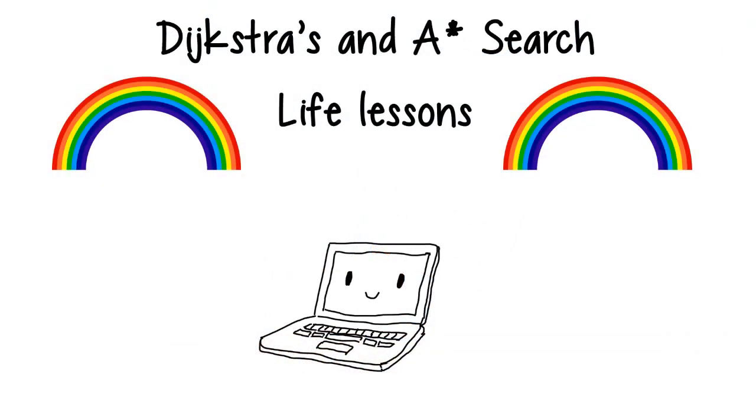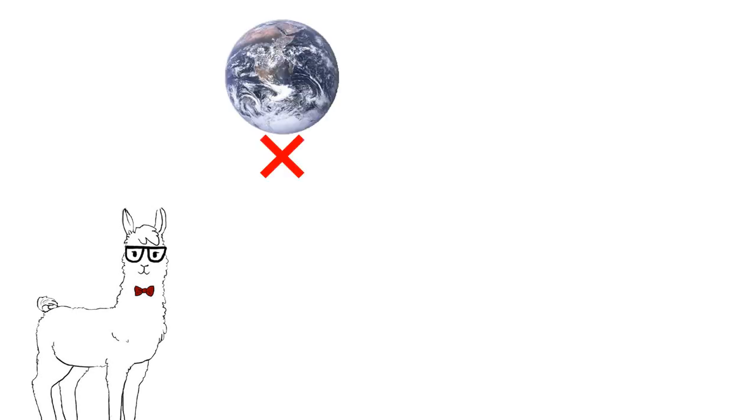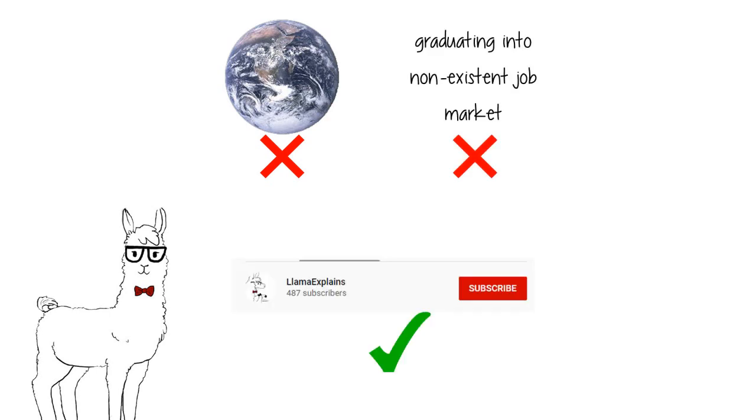And second, Dijkstra's algorithm is what we call a greedy algorithm. In other words, it shows us that sometimes, the very best thing we can do is not really worry about the world or the far future, and really just chill out and do the easiest thing right in front of us.